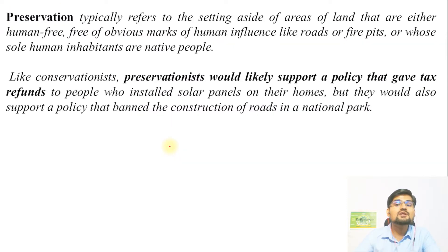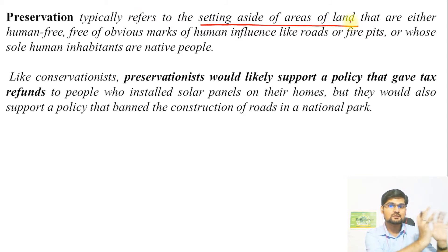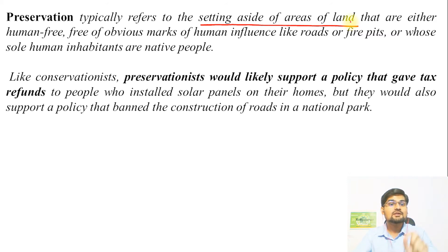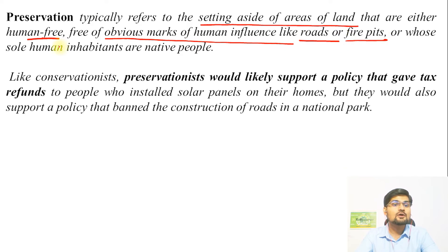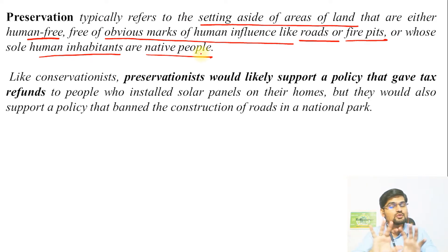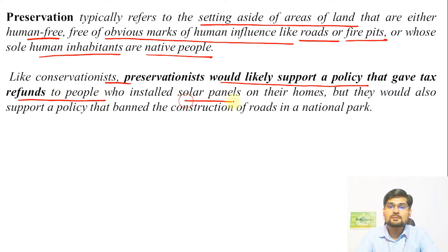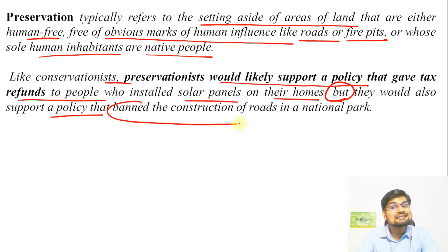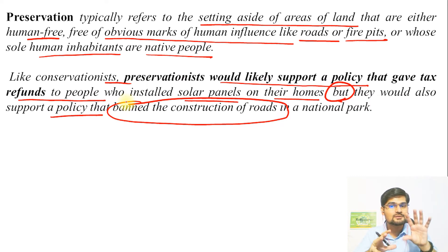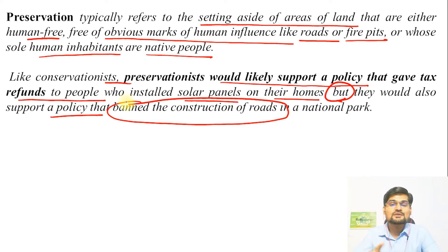Preservation, on the other hand, typically refers to setting aside areas of land as restricted zones where no construction or access is permitted — areas that should be free from obvious marks of human influence like roads or fire pits. Preservationists, like conservationists, would support solar panel tax refunds, but they would also support a policy that bans the construction of roads. These are the key differences between a conservationist and a preservationist — both are complementary factors important for ecosystem management.